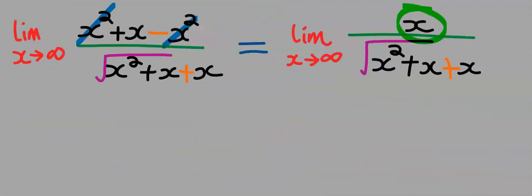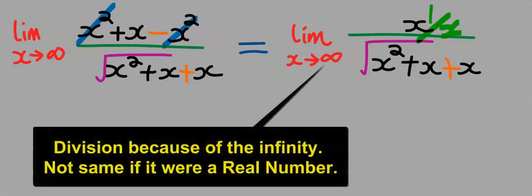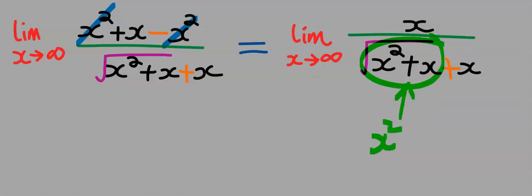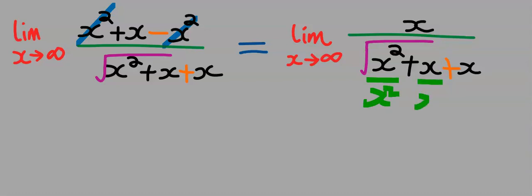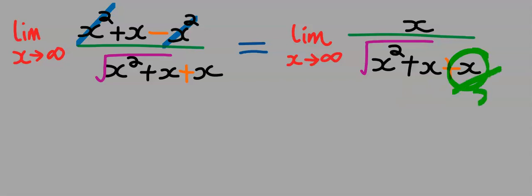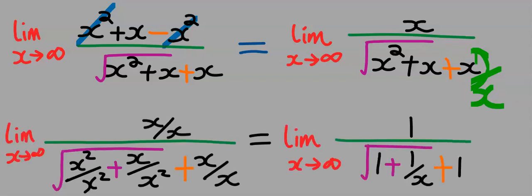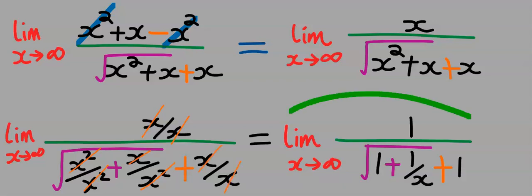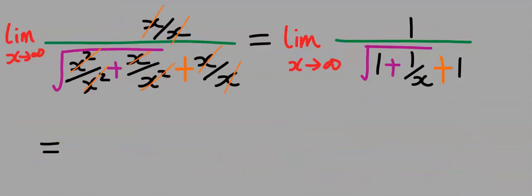Next, at the numerator the highest power of x is 1, so we divide this x by x. At the denominator, everything inside the square root is divided by x squared, because x squared is the highest power of x. This term is divided by x squared and this term is also divided by x squared. The x not enclosed in the square root is divided by x. x cancels with x, x squared cancels with x squared, and x cancels with just 1x, leaving the remaining function.